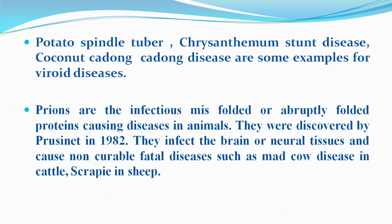Next is Prions. Prions are infectious mis-folded or abnormally-folded proteins causing diseases in animals. They were discovered by Prusiner in 1982. They infect the brain or neural tissues and cause non-curable fatal diseases such as mad cow disease in cattle and scrapie in sheep.